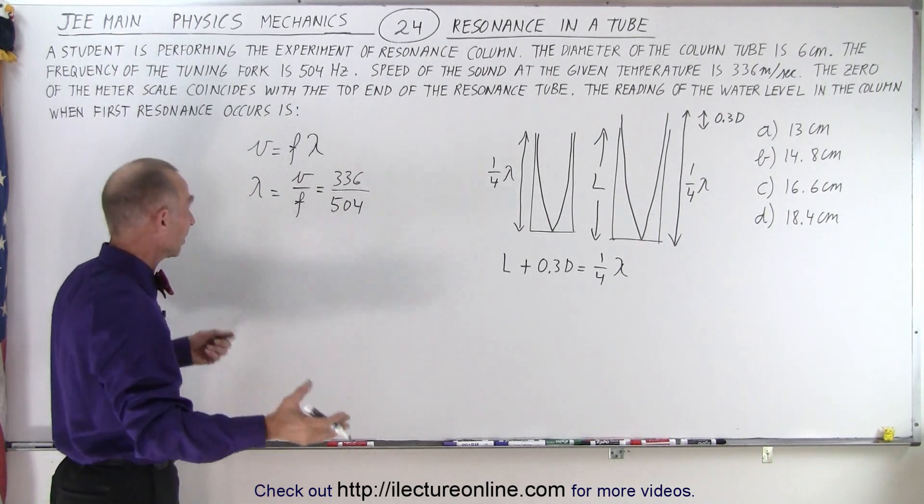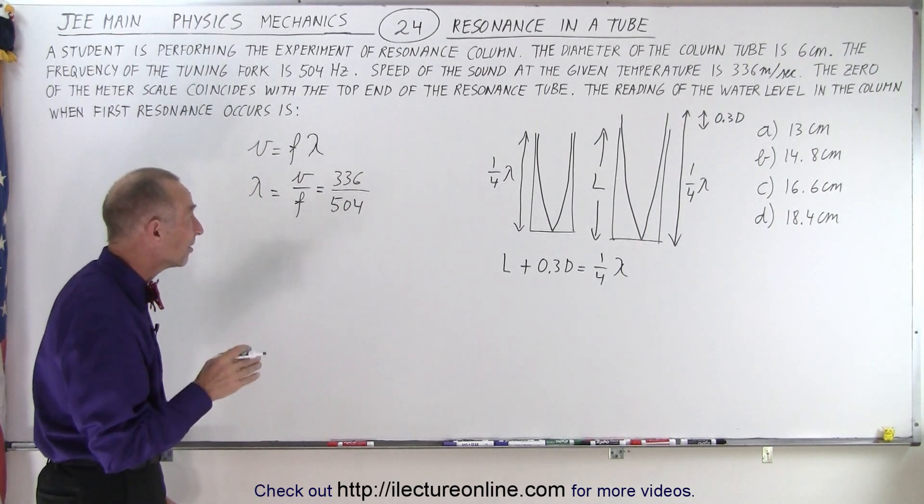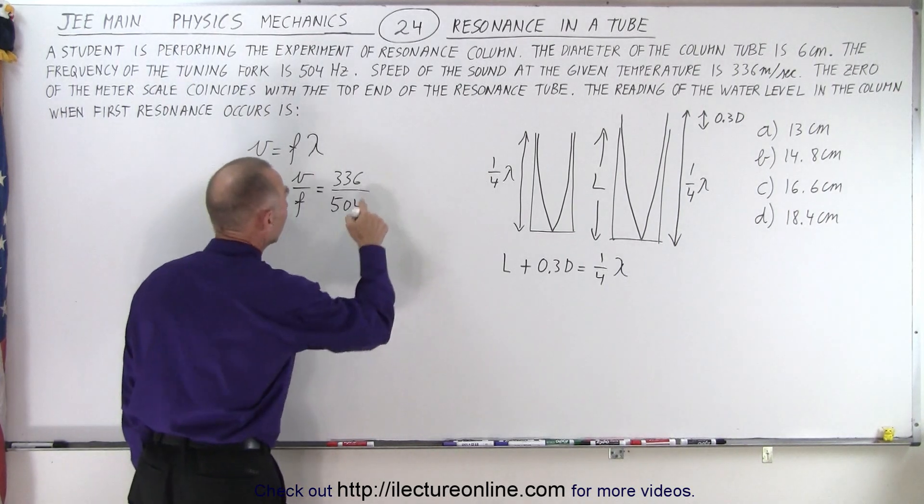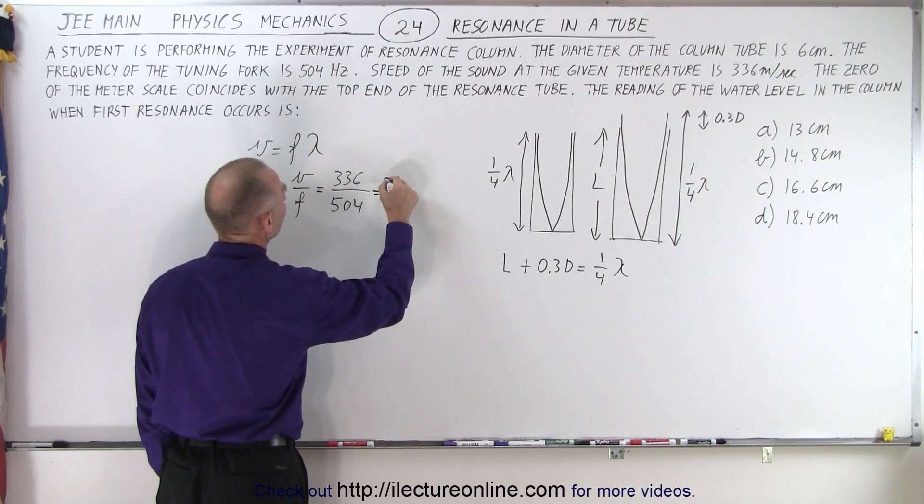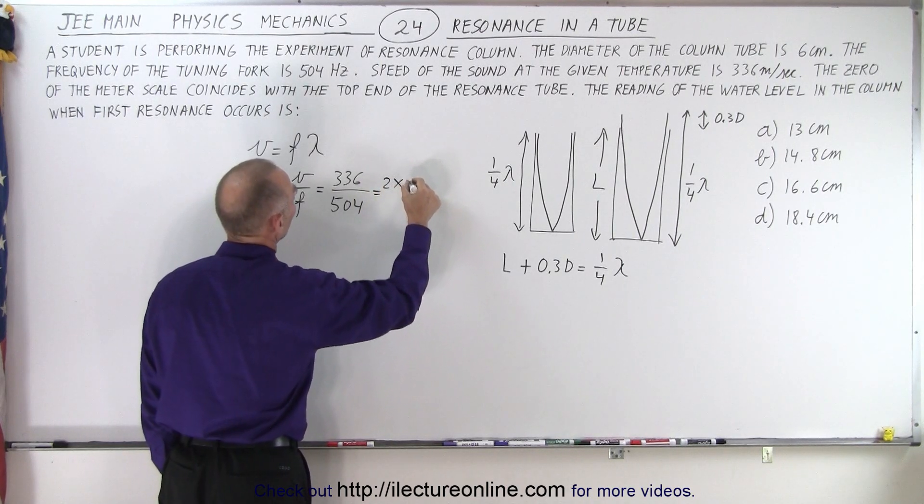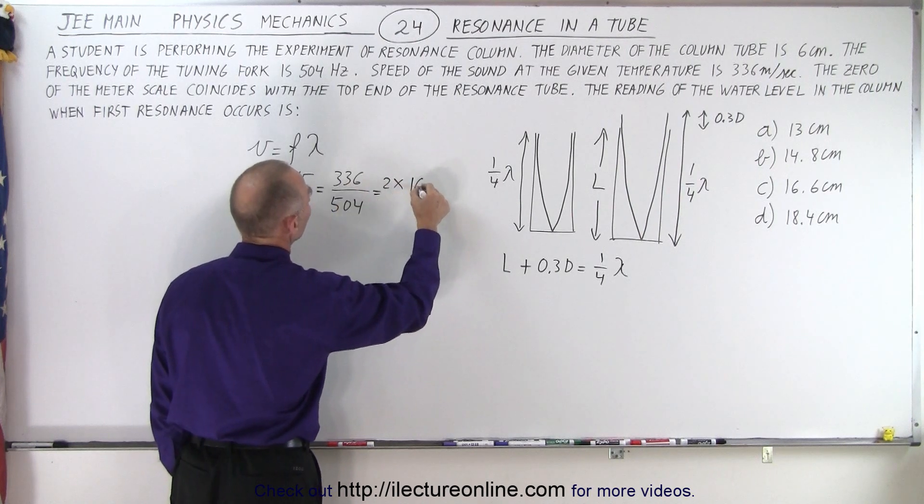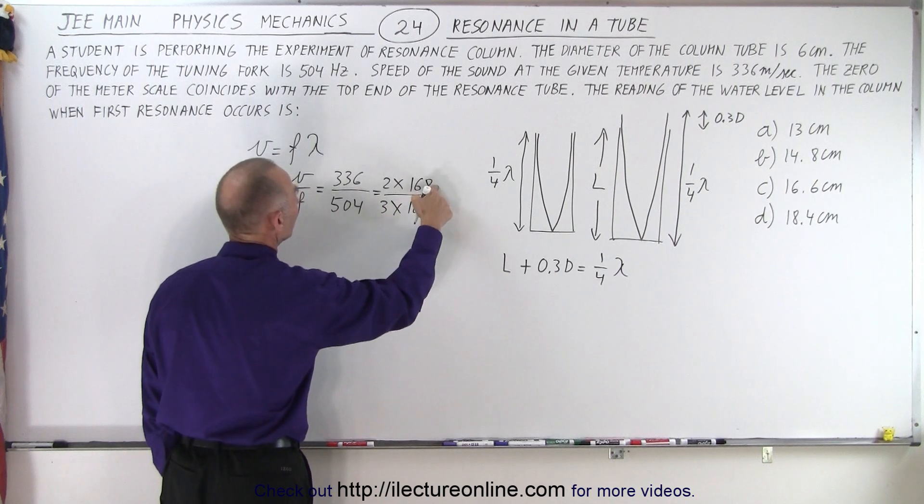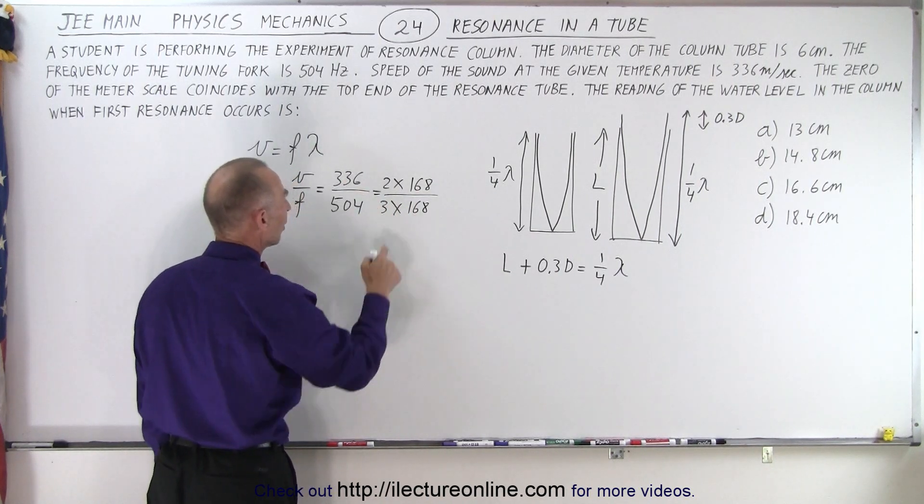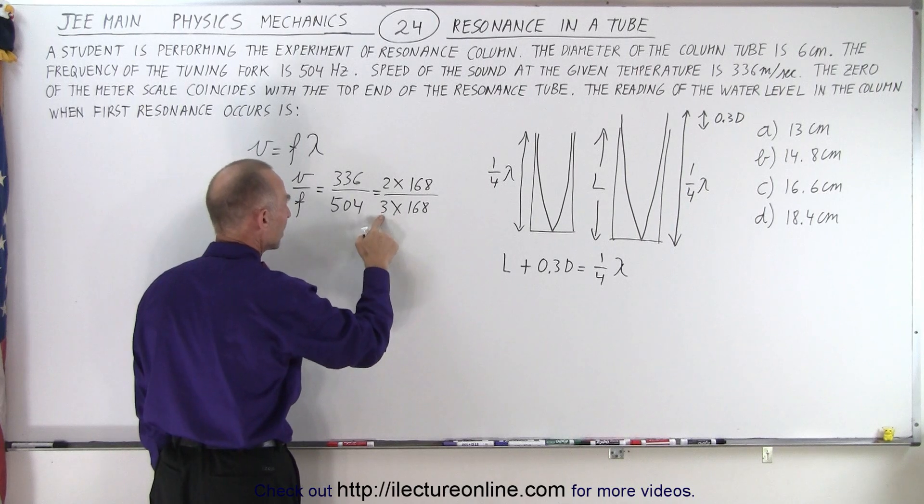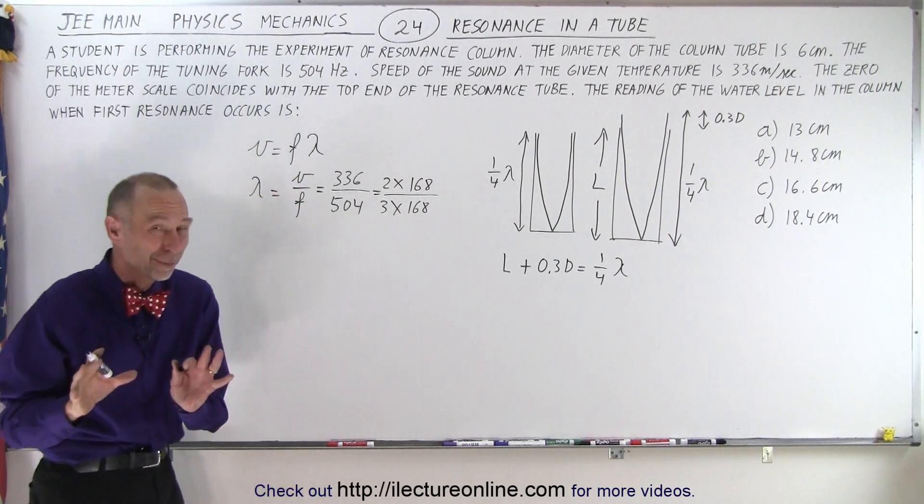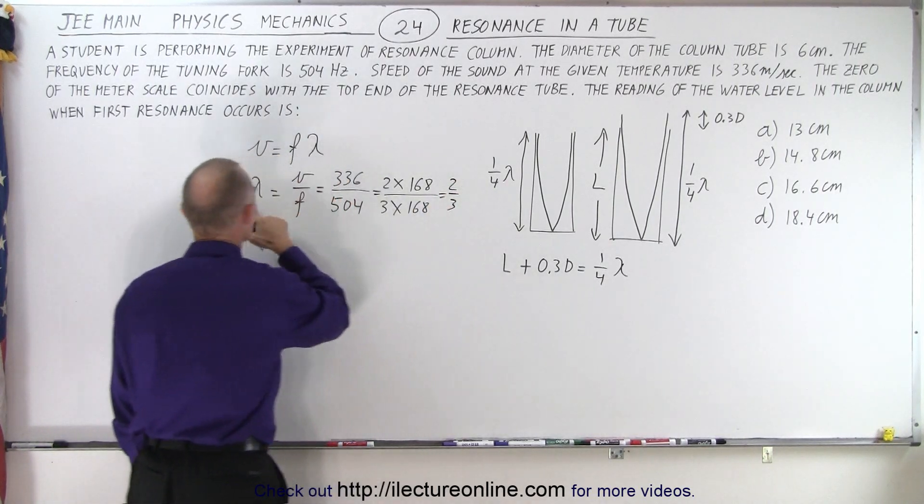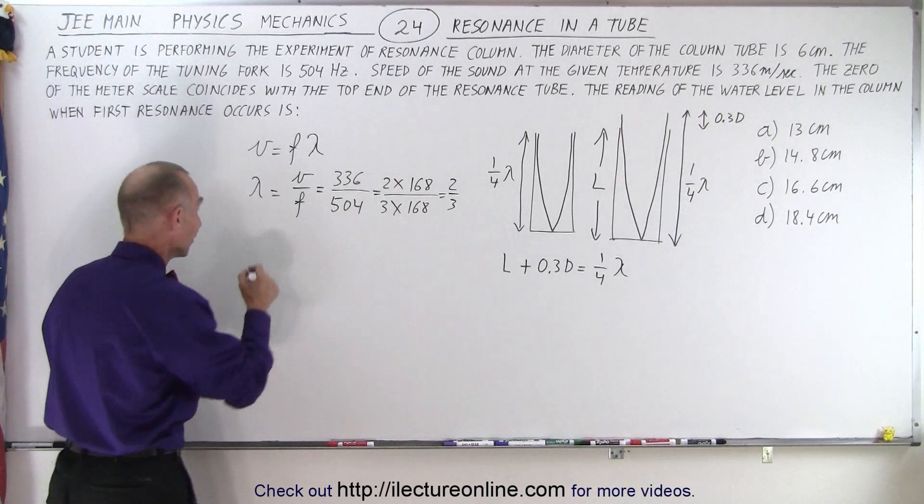Now at first you may say, well I'll have a calculator, how do I deal with this? But it turns out that this is in the ratio of exactly 2 to 3. If we take half of this, this would be equal to 2 times 168, and divide this by 3 times 168. Because you double 168, you get indeed 336. You multiply 168 by 3, you do indeed get 504. So we have a very nice ratio of 2 to 3, and that would be the wavelength.